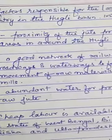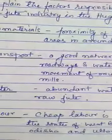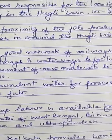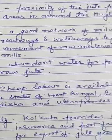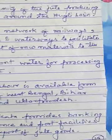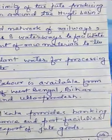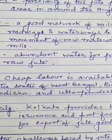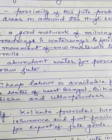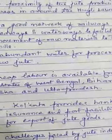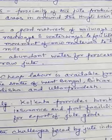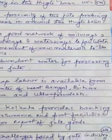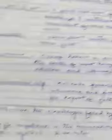Third is water — abundant water for processing raw jute is available from River Hooghly. Next, labor — cheap labor is available from the states of West Bengal, Bihar, Odisha, and Uttar Pradesh. The commercial city Kolkata provides banking, insurance, and port facilities for the export of jute from India to other countries. Kolkata has many banks which provide easy loans to jute mills, and many insurance companies provide insurance facilities to these jute mills.